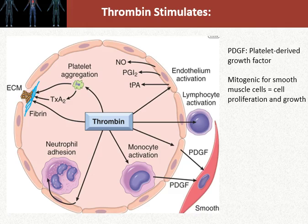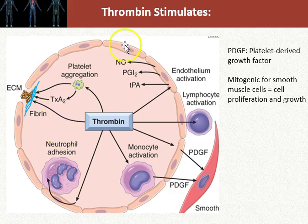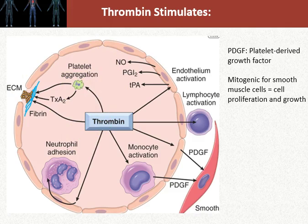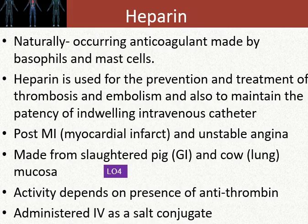Thrombin can also positively influence fibrin, which forms the mesh-like network that makes clots sticky. So thrombin is an important physiologic mediator of coagulation. Once thrombin — factor 2 — is activated via factor 10a, it can also activate other coagulation factors.